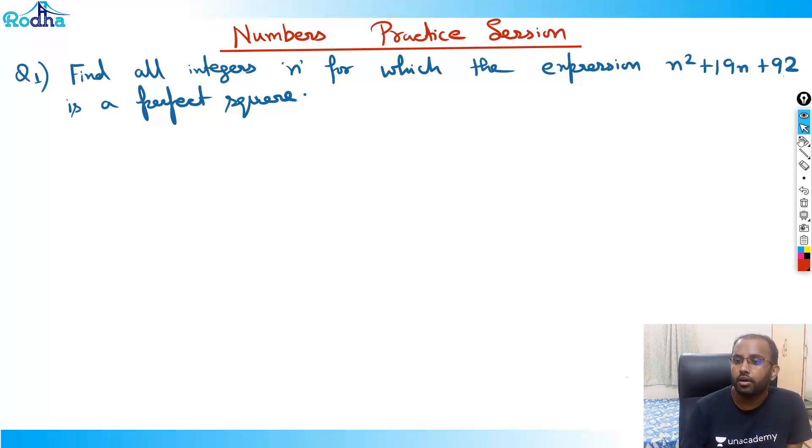Now we'll solve it, considering that you have tried this question. Look at this guys. This question says find all integers n for which the expression n² + 19n + 92 is a perfect square. I want this expression to be a perfect square.